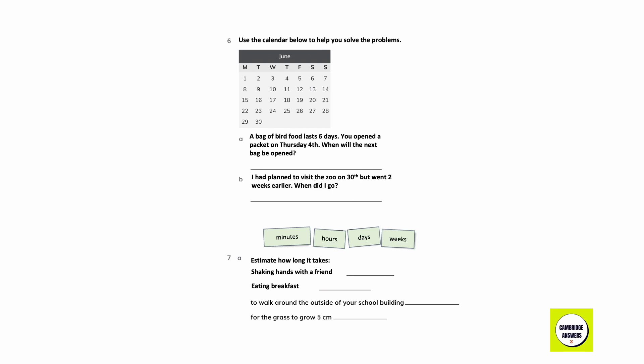Use the calendar to help you solve these problems. A bag of bird food lasts six days. You open the packet on Thursday 4th. When will you open the next bag? Counting ahead six days from Thursday 4th gives 10th June. I plan to visit the zoo on 30th but went two weeks earlier. Counting back 14 days from 30th, we get 16th June.